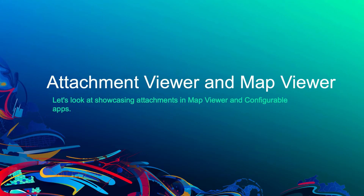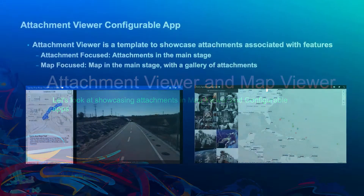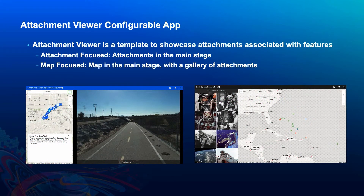The first thing we are going to be taking a look at will be using the attachment viewer configurable application. After that we will look at configuring pop-ups in the map viewer to showcase attachments that are associated with a feature layer. The attachment viewer app is a great template that we can use to showcase and draw a user's attention to photos, videos, or PDFs associated with a location.